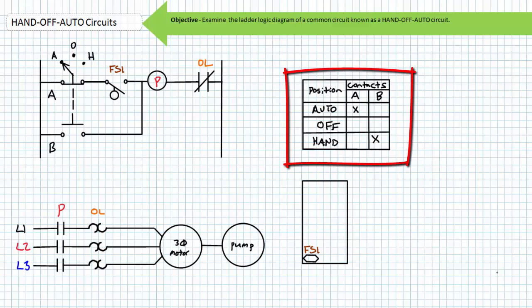The target table, sometimes called the contact chart for the selector switch, indicates A is closed in the auto position, neither contact is closed in the off position, and contact B is closed in the hand position.